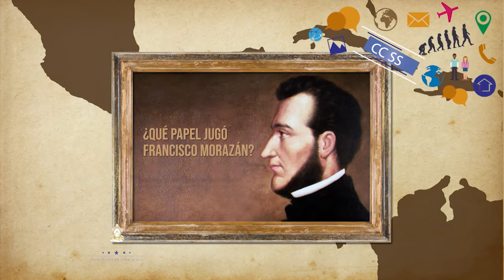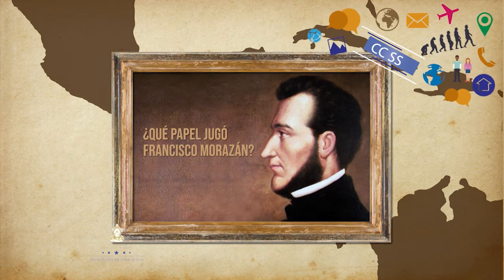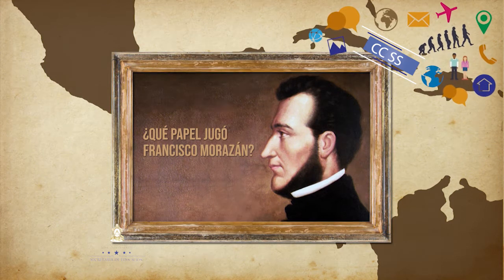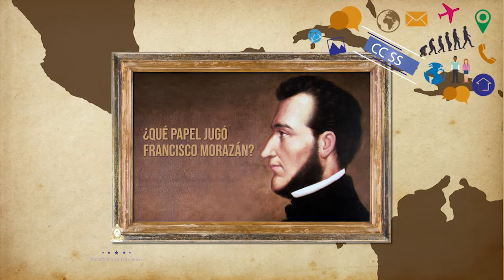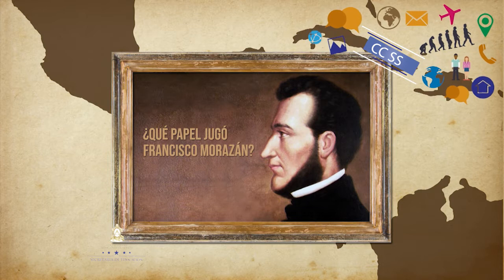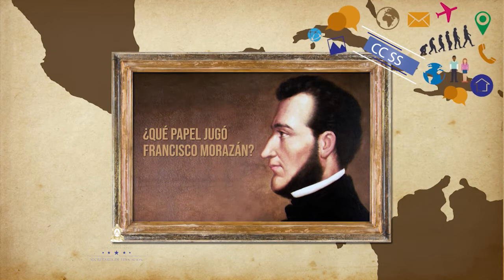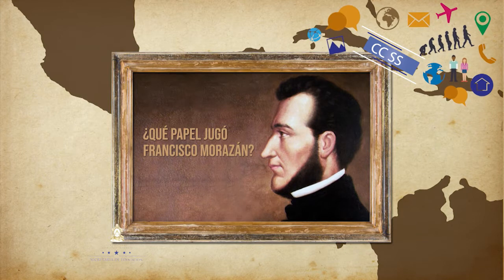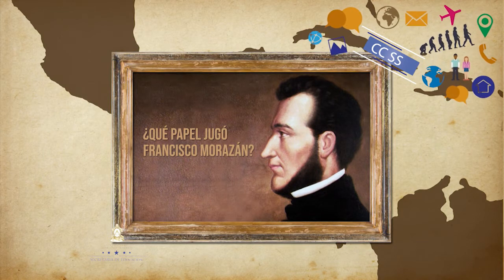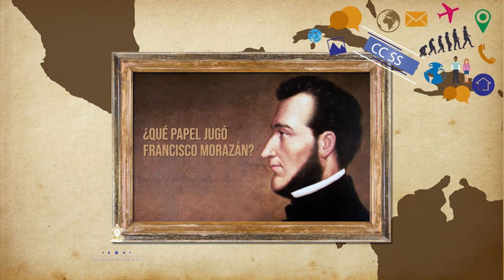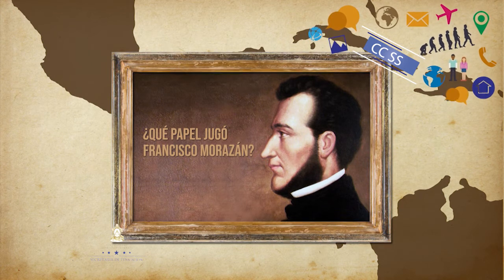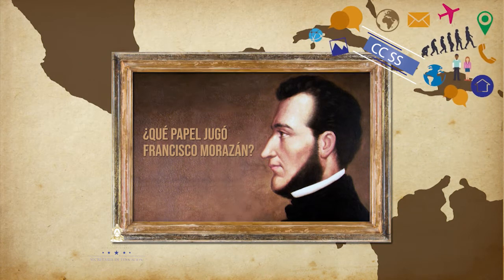El militar y político hondureño general Francisco Morazán siempre soñó con ver a Centroamérica como una sola nación. Morazán fue recibido en Guatemala con honores y se le designó Benemérito de la Patria. Regresó a Honduras y reasumió su cargo de jefe de Estado. Convocada nueva elección para elegir presidente de la federación, Morazán fue electo y asumió el cargo el 16 de septiembre de 1830.